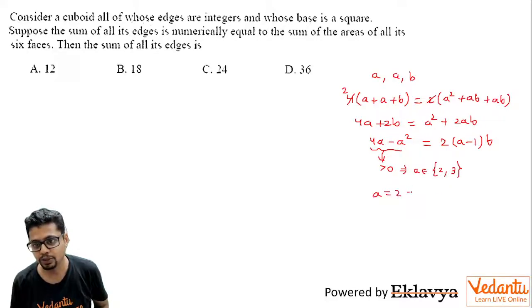Now when A is 2, you put A to be 2, you get 8 - 4 = 2 × 1 × B. That means B is 2. Seems good.